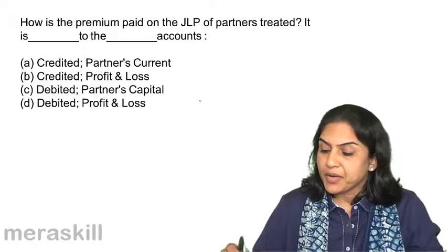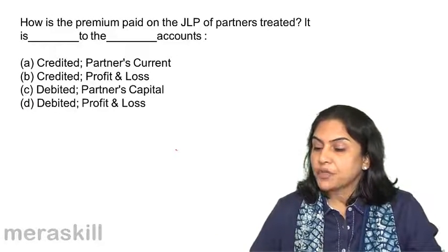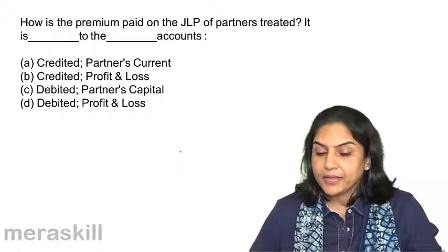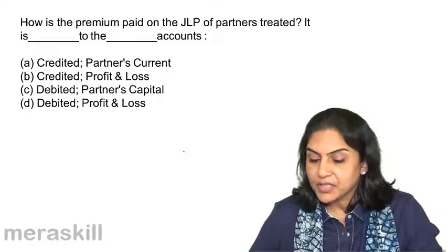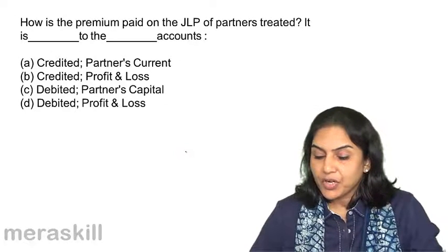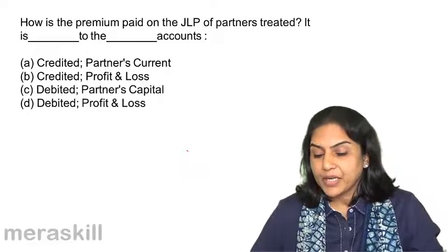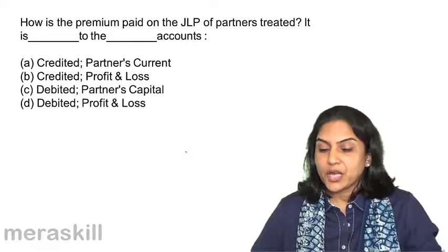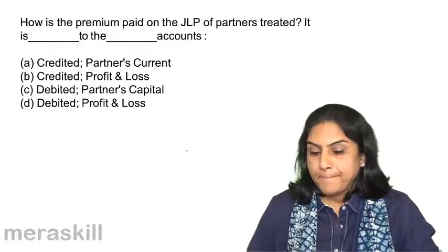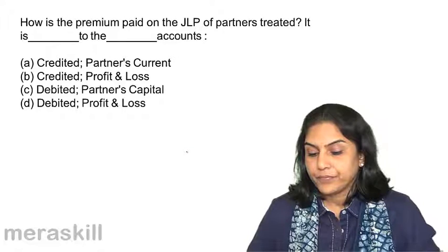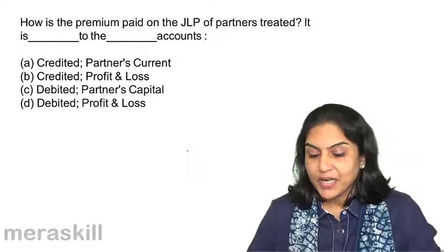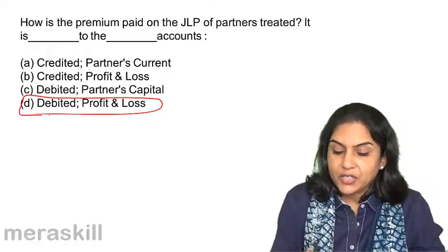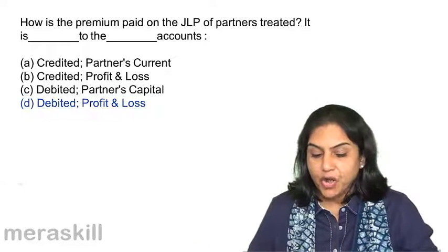How is the premium paid on the JLP of the partners treated? Is it credited to the partner's current account; credited to the profit and loss account; debited to the partner's capital account; or debited to the profit and loss account? When the premium paid is treated as an expense, it is debited to the profit and loss account. Correct option D.